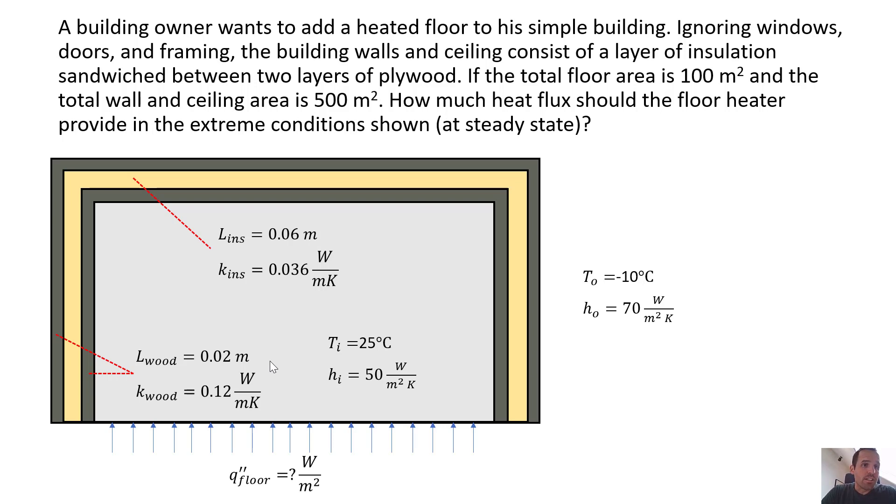This problem states a building owner wants to add a heated floor to his simple building. Ignoring windows, doors, and framing, the building walls and ceiling consist of a layer of insulation sandwiched between two layers of plywood. If the total floor area is 100 square meters and the total wall and ceiling area is 500 square meters, and those are combined, how much heat flux should the floor heater provide in the extreme conditions shown?